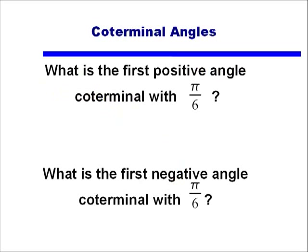Let's look at two examples. If I'm given an angle of π/6, what is the first positive angle coterminal with that, and what is the first negative angle coterminal with that?